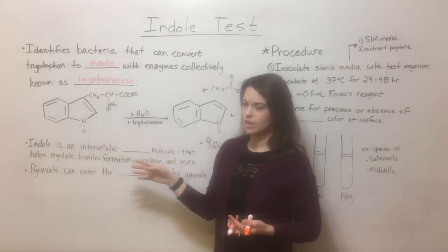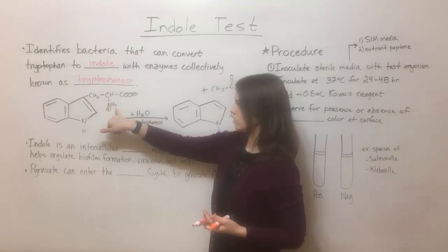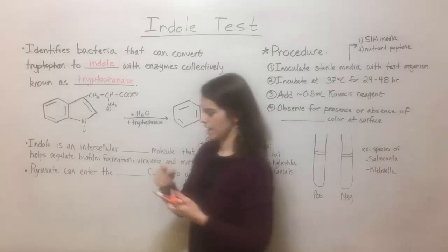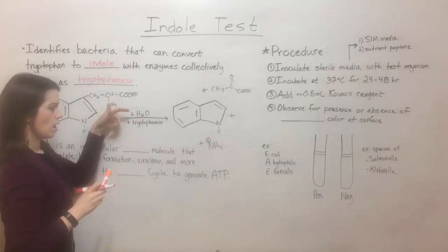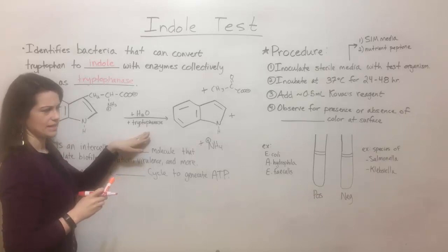If you're used to looking at amino acid structures, there is your alpha carbon with its hydrogen, its carboxyl group, and its amino group, and this would be its R group that makes tryptophan. So this right here is tryptophan and it is reacted with water.